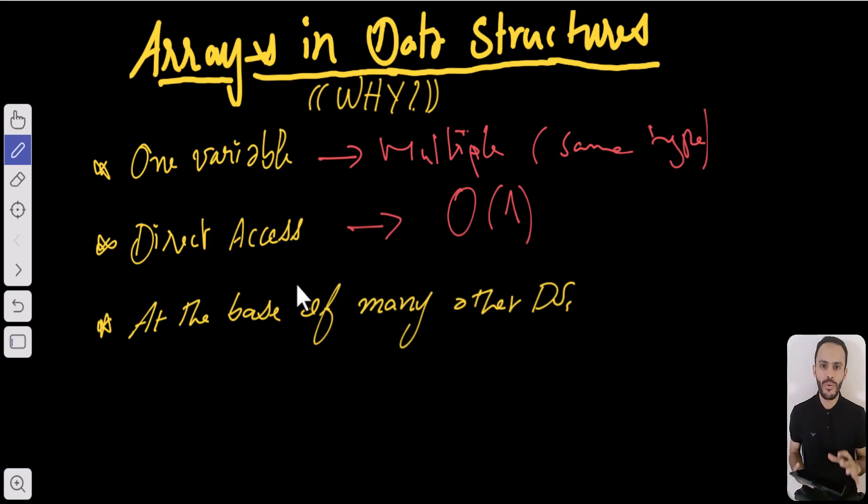And the third point is that arrays are at the base of other data structures - for example, they're at the base of stack data structures and many others. Basically, this is it for the array data structure.